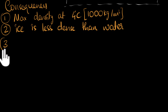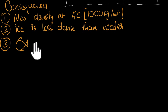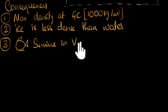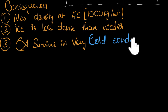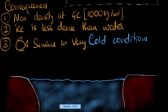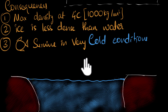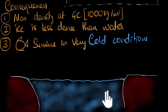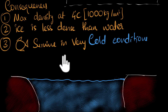The third consequence is that aquatic life can survive in very cold conditions. Suppose this represents a lake or a pond in a very cold place where the surrounding temperature is below zero degrees Celsius. We would expect this entire water to freeze up, but it doesn't — and it's all because of this anomalous behavior of water.